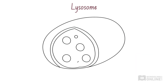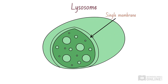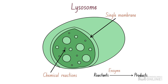Some organelles are surrounded by one or more membranes which ensure that their internal conditions are different to the external environment. Each organelle accommodates a variety of chemical reactions that are essential for cell survival. If we look inside a membrane-bound organelle, such as a lysosome, we can see high concentrations of enzymes and reactants. An enzyme is a biological catalyst that speeds up the chemical reactions inside cells. Therefore, membranes allow organelles to function more efficiently.